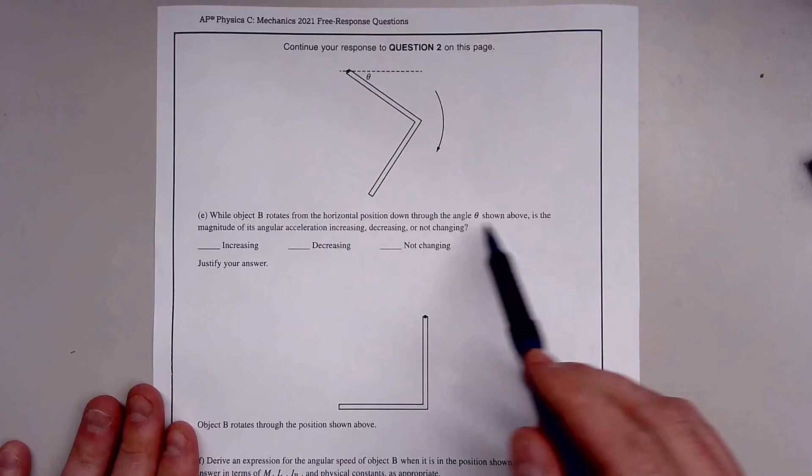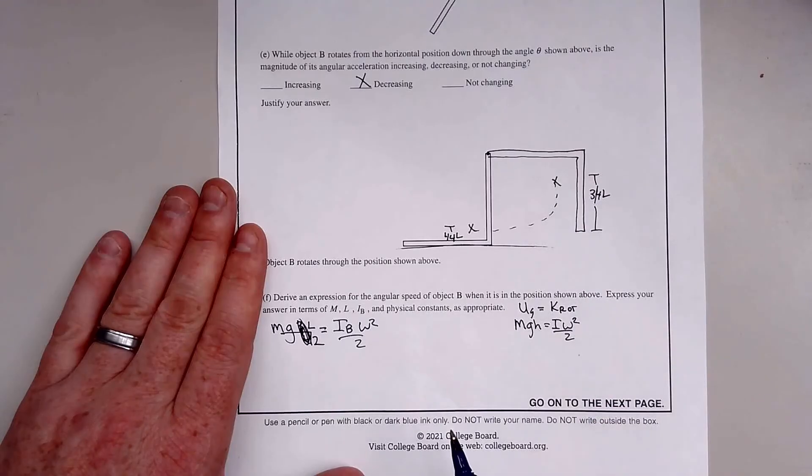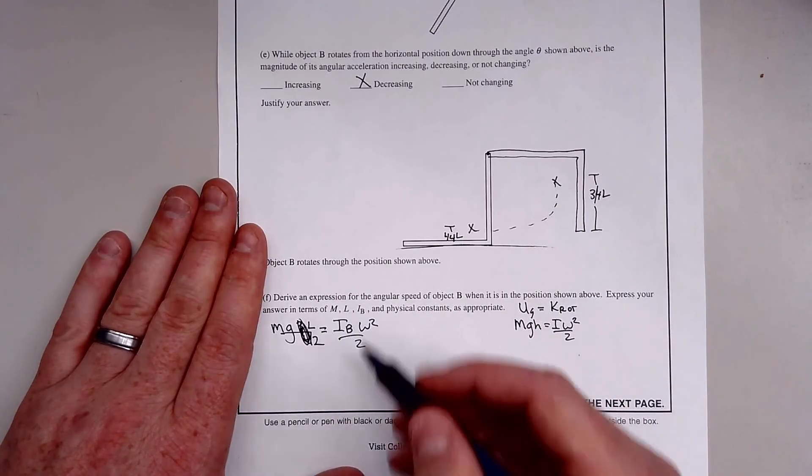So it's not actually 3/4. This is actually a quarter right here. It actually falls L over 2. Be very careful about that. If you put 3/4, I'm sure you'd get partial credit, but that's a tricky question. So it's L over 2. That makes sense.